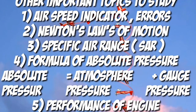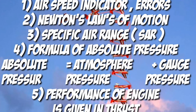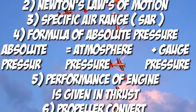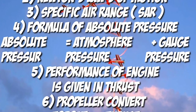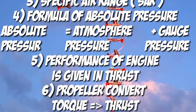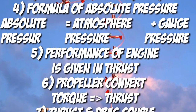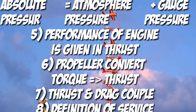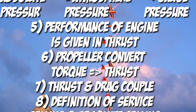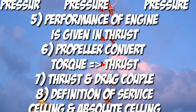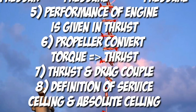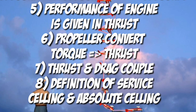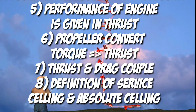Other important topics to study: airspeed indicator errors, Newton's laws applicable to flight — first, second, and third law, meaning all laws are applicable. Specific air range, which is the distance covered by an aircraft in steady level flight per unit weight of fuel. Remember the formula: absolute pressure equals atmospheric pressure plus gauge pressure. The performance of the engine is given in thrust and not in power. Remember that the propeller converts torque to thrust, and the thrust-drag couple is one important topic.